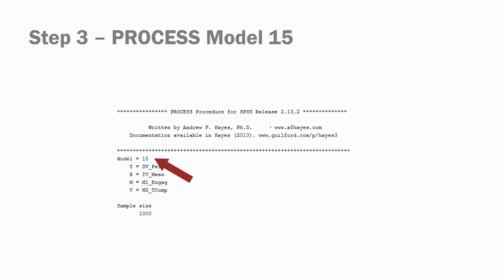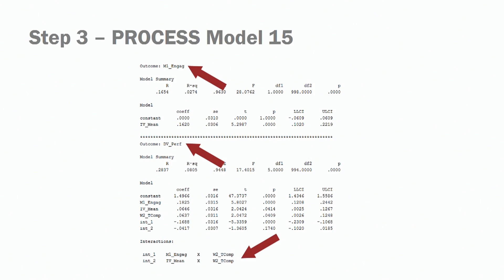The first thing you do when you run a process model is check the model number — and this is model number 15. We have our dependent variable, independent variable, mediator as engagement, and our moderator as task complexity. Scrolling down the output, we see two steps. The first step looks at the relationship between our independent variable, job meaningfulness, and job engagement — and we find a significant relationship because p is less than 0.05.